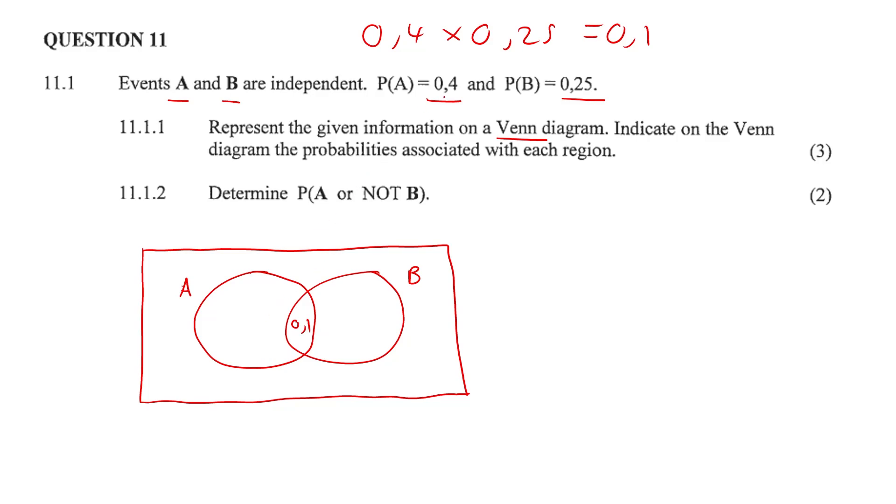And the probability of A is 0.4. So 0.4 minus 0.1 gives us 0.3. The probability of B occurring is 0.25 minus 0.1, and that would give us 0.15.